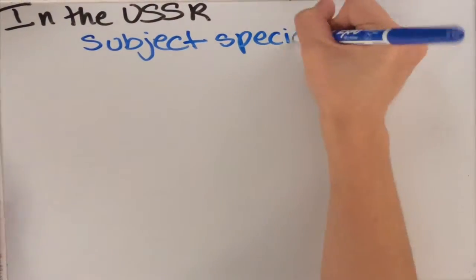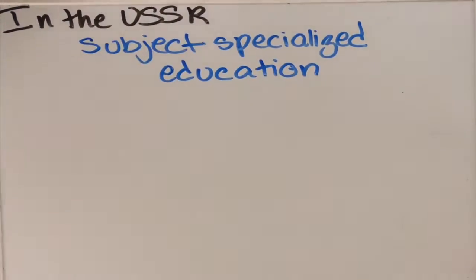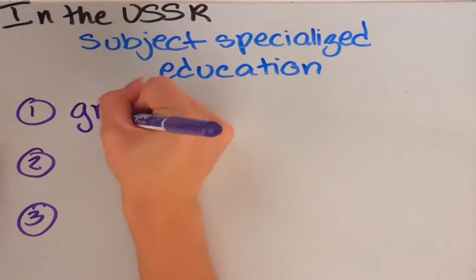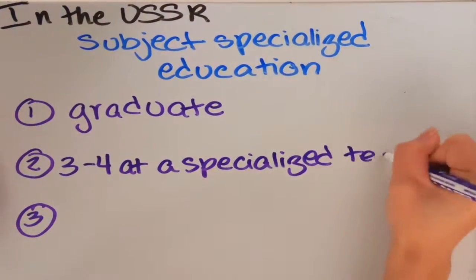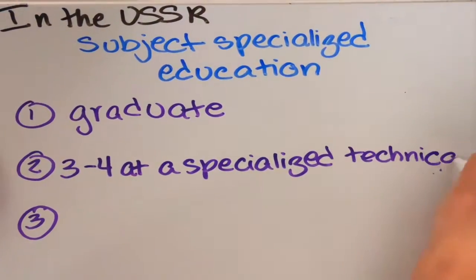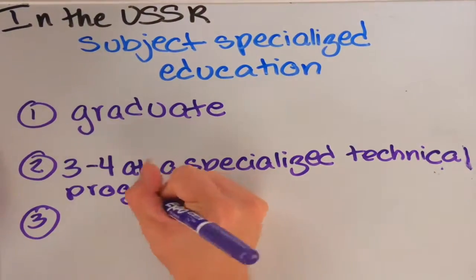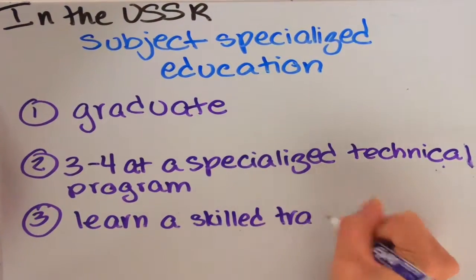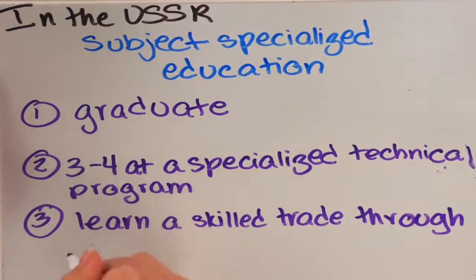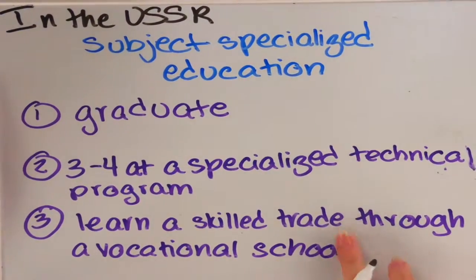The way subject-specialized education works is like this. After completing grade 8, there are three options to pursue. One is essentially an equivalent to our graduation. They receive a certificate upon passing state exams. This is the most popular route. Another way is to be given some form of training in a secondary specialized school, most of which are for technical programs, for three to four years. The third option is to acquire a skilled trade through vocational school.